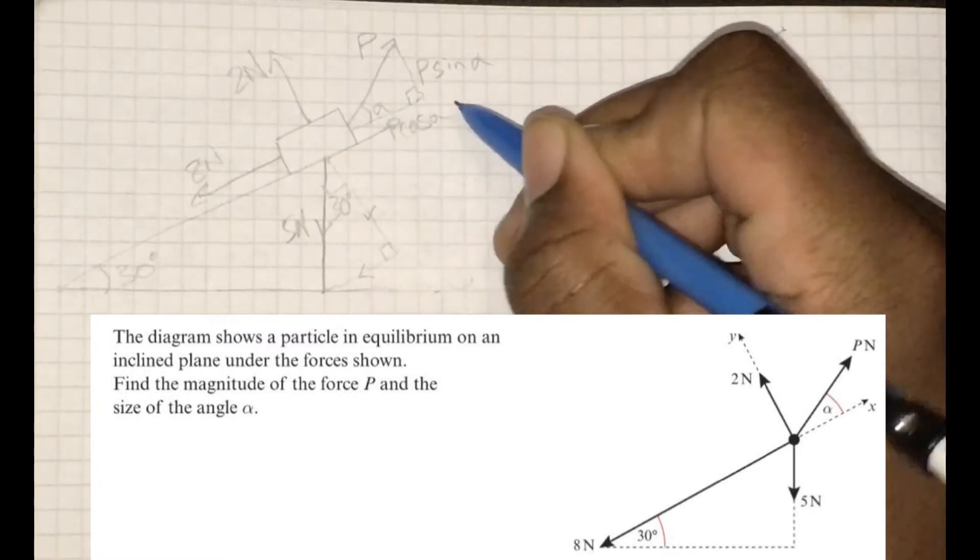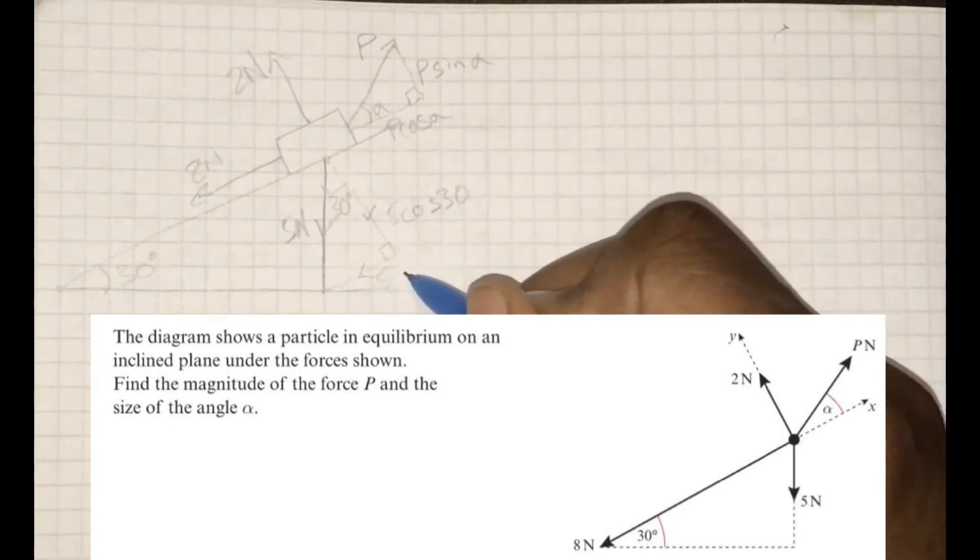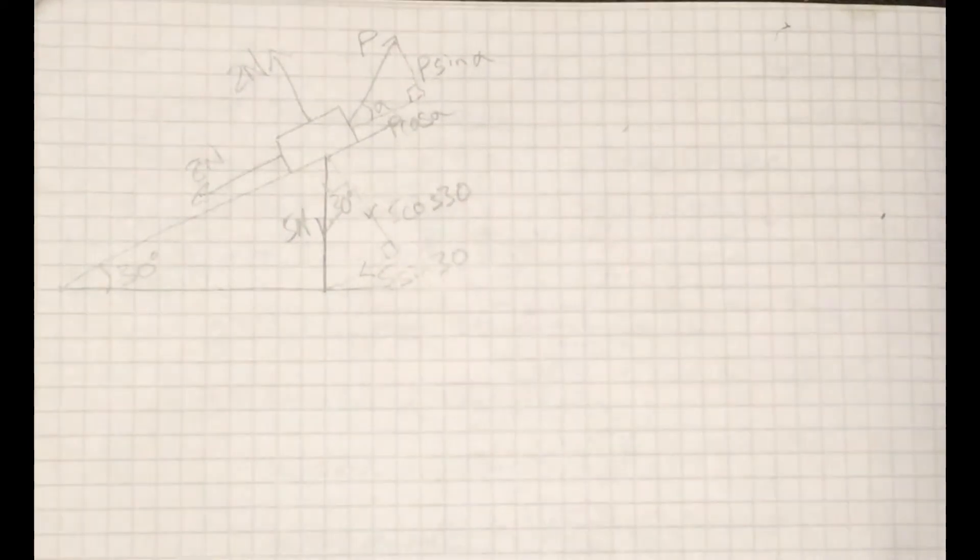Let's make sure we label the components. So P sine alpha, P cosine alpha, 5 cosine 30, and 5 sine 30. Okay, diagram is fully labelled. We're ready to do our resolving.